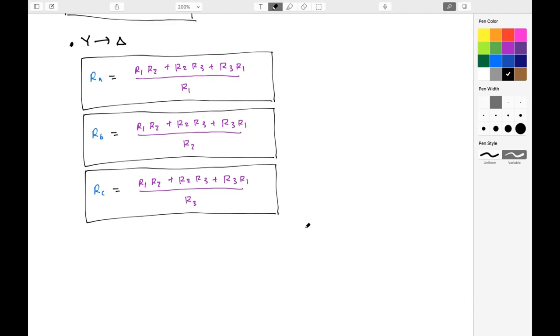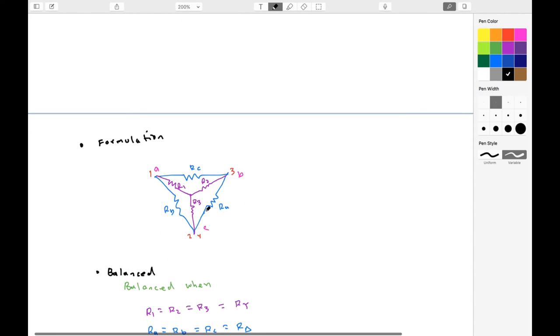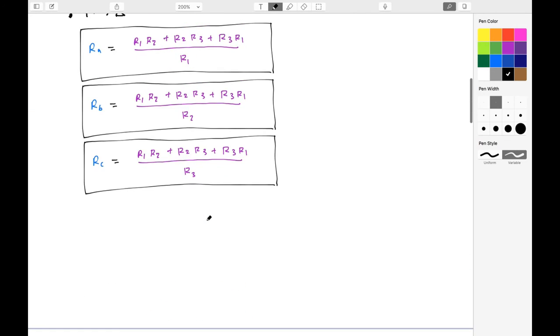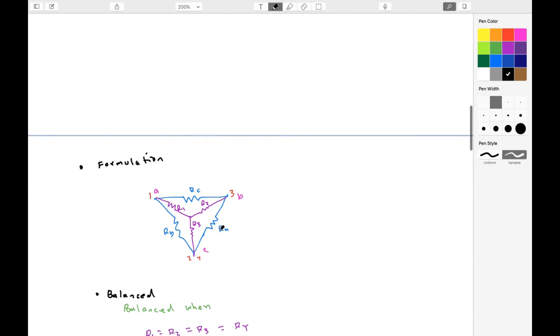Now, to help you understand a little better, what we can do is formulate it by putting the two things superimposed on each other. So, for example, in this Y to delta, if I want Ra, what I'm going to do is take all possible products of two resistors of Y, taking one at a time, and sum together, and then I'm going to divide by the resistor which is across from it. So in this case, R1.